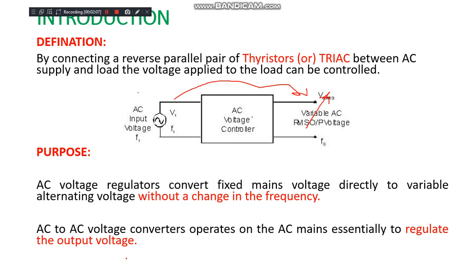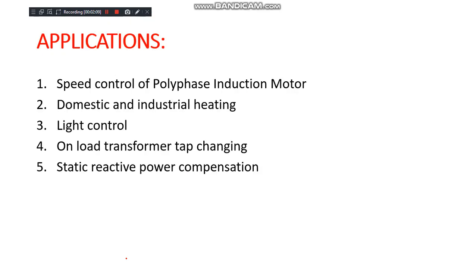Now let's consider the applications of AC to AC converters. By AC to AC conversion we get variable AC voltage at the output. Based on that, the applications are: first, speed control of polyphase induction motors; second, domestic and industrial heating; third, light control; fourth, on-load transformer tap changing; and fifth — very important in power systems — static reactive power compensation. Such converters are generally used in FACTS devices.